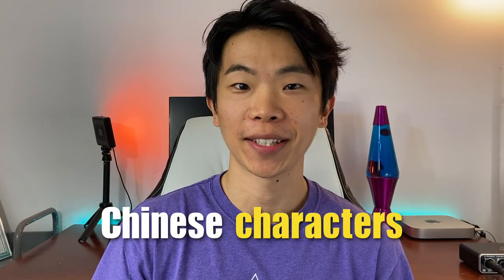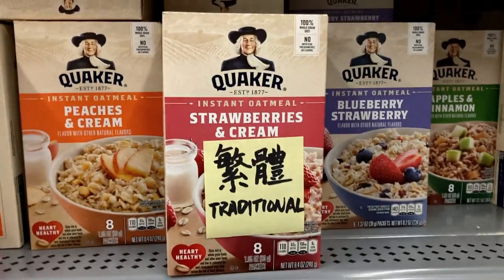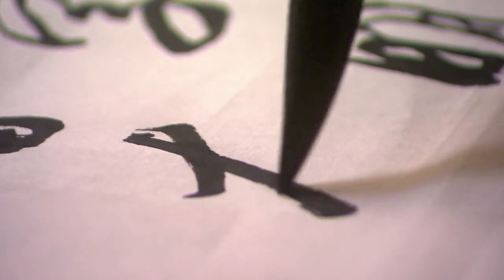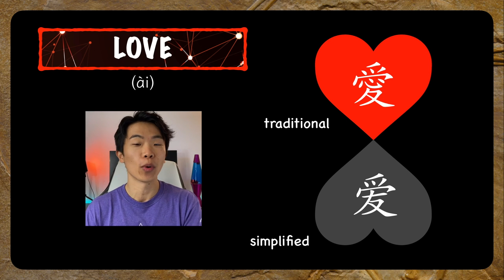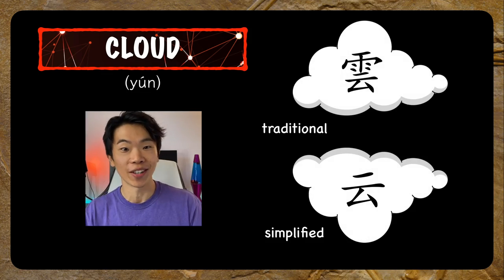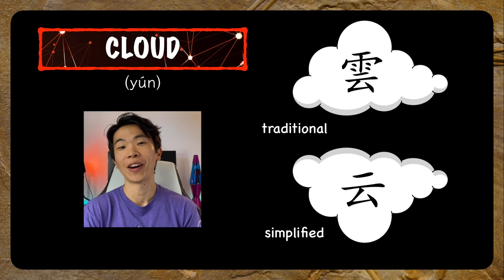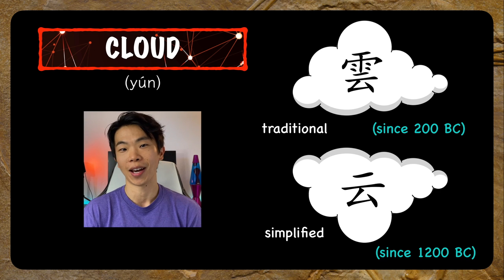Everything you've been told about simplified Chinese characters has been a lie. You've probably heard the story: simplified Chinese is like the cheap knockoff version that the Communist Party created to replace traditional characters, which are far more beautiful and meaningful. After all, how can you have the character for love without the heart in it? The answer? By using one that's been around for 3,000 years. The simplified version of this character, meaning cloud, actually predates the traditional one by roughly 1,000 years.